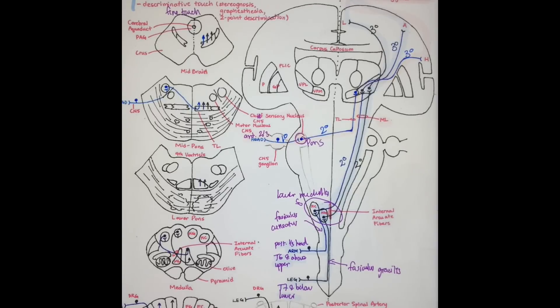It is the same pathway for both your upper body and your lower body. Your upper body consists of your arms, your posterior one-third of the head, and it is T6 and above. Lower body is T7 and below, and includes your legs and feet.